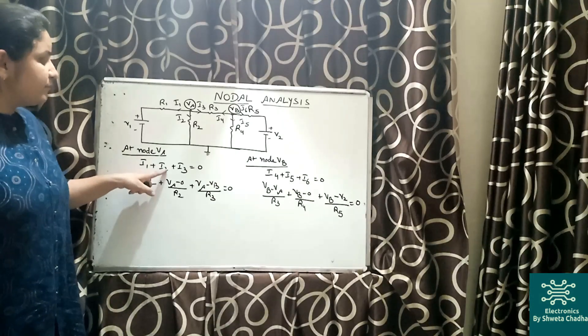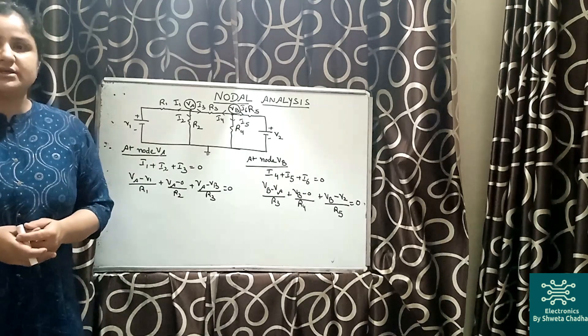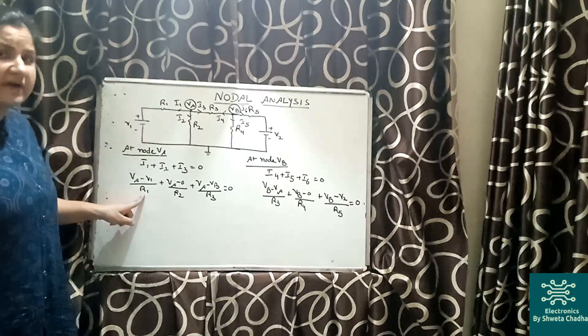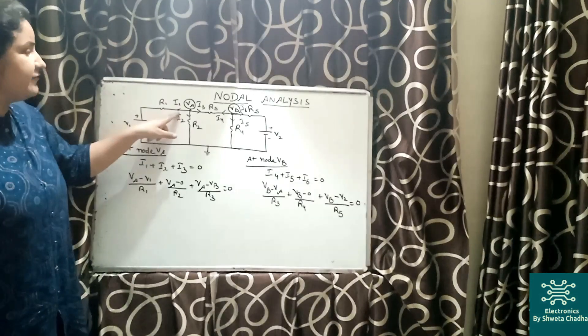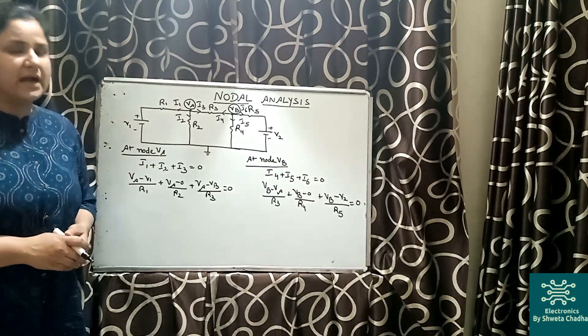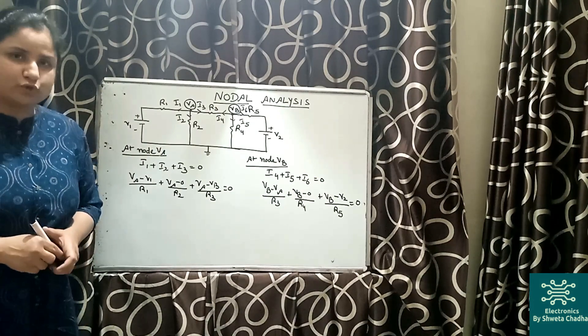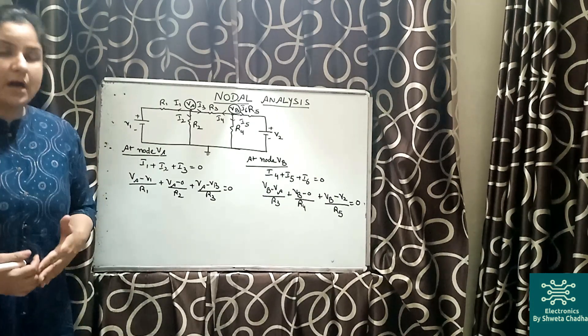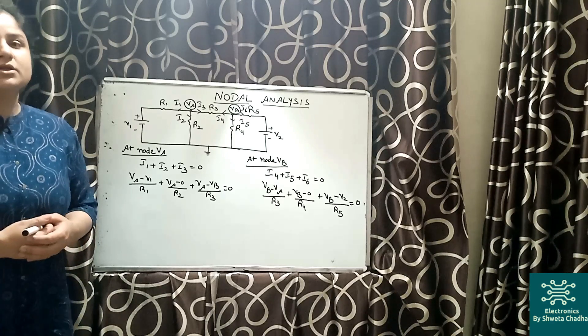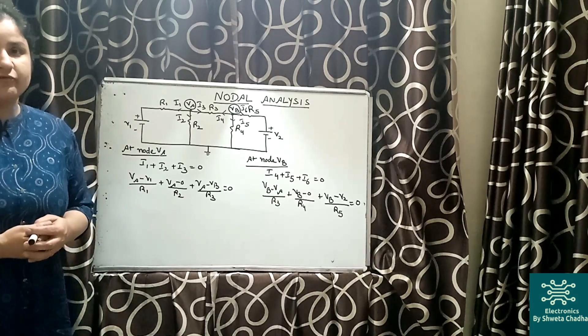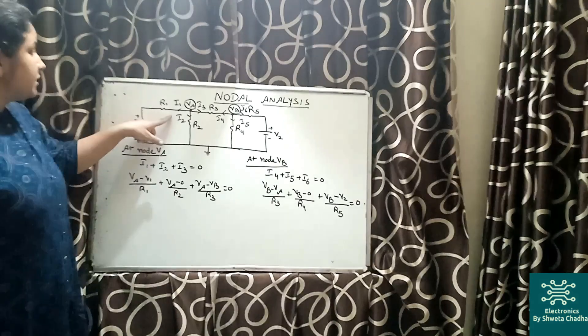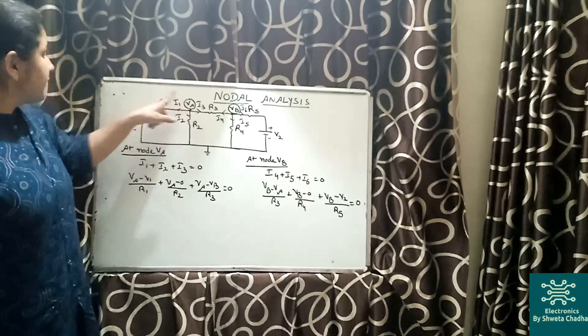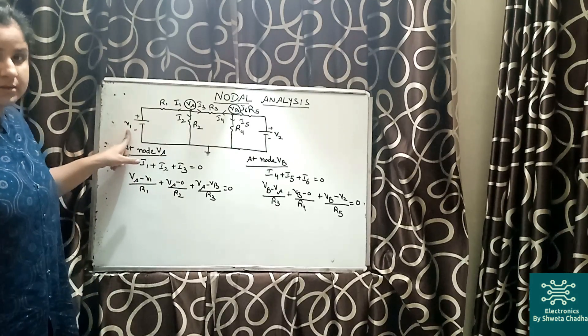That means at node VA, let us apply KCL. We will get i1 plus i2 plus i3 is equal to zero. What is the value of i1? i1 can simply be written with the help of Ohm's law. Ohm's law says that i is equal to V upon R, where V is nothing but the potential difference of our branch.